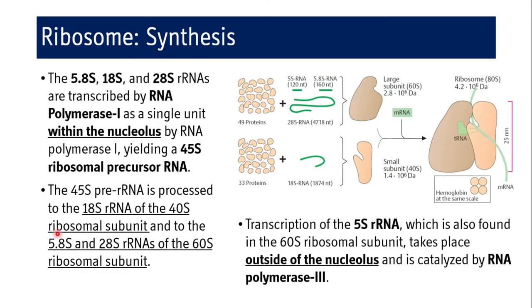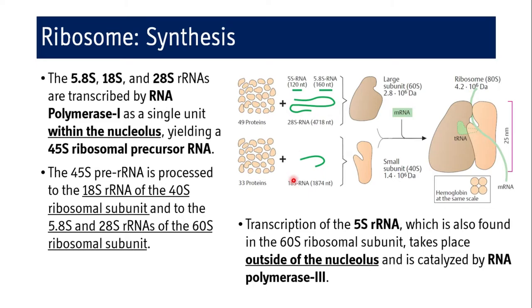Now let us see how these rRNAs are synthesized. The 5.8S, 18S, and 28S rRNAs are synthesized by RNA polymerase 1 as a single unit within the nucleolus, yielding a 45S ribosomal precursor RNA. This 45S pre-rRNA is then processed to give 18S rRNA for the 40S ribosomal subunit, and 5.8S and 28S rRNA for the 60S ribosomal subunit. The 28S rRNA has peptidyl transferase activity, acting as a ribozyme.